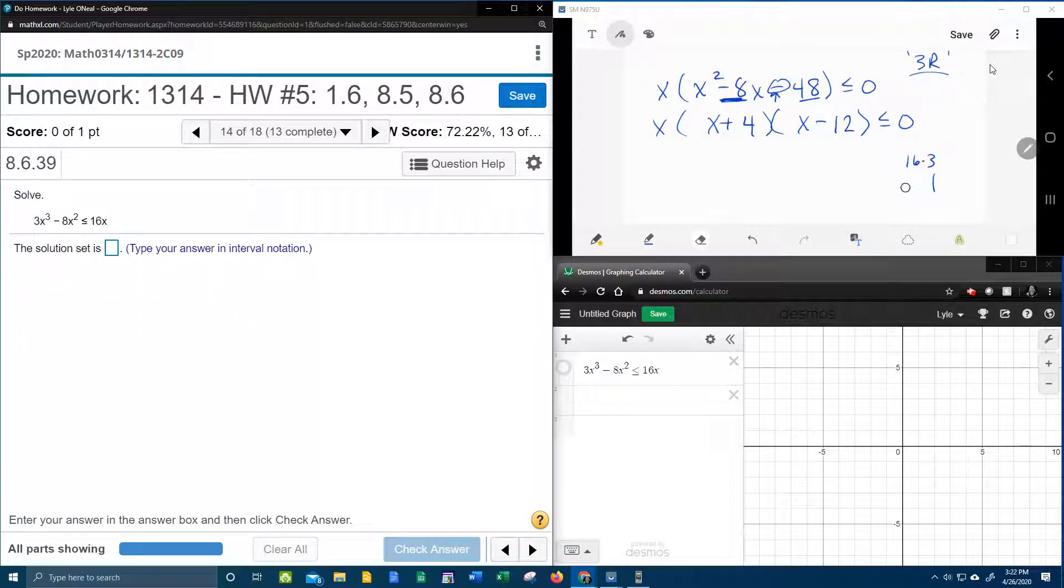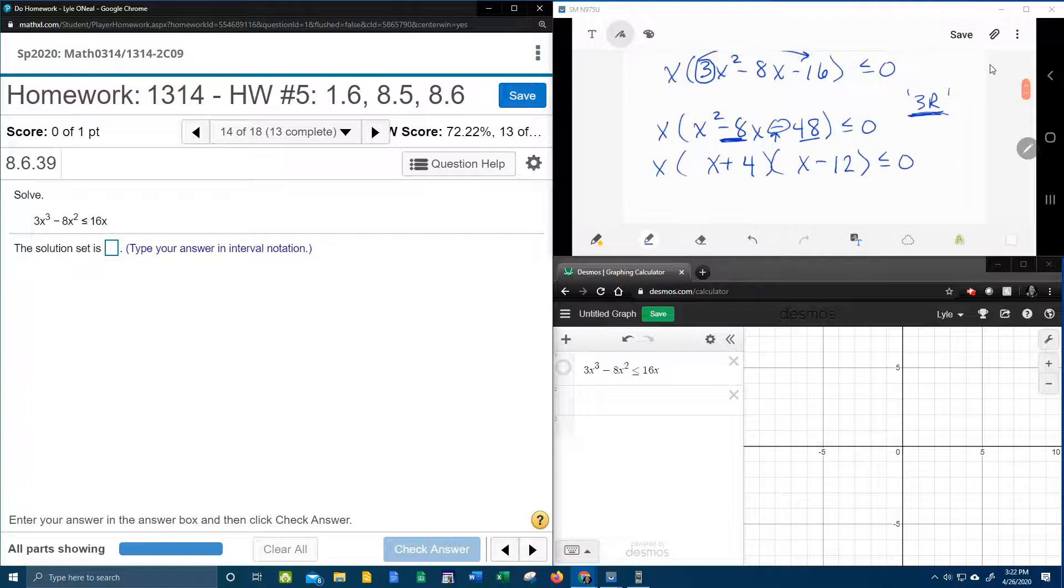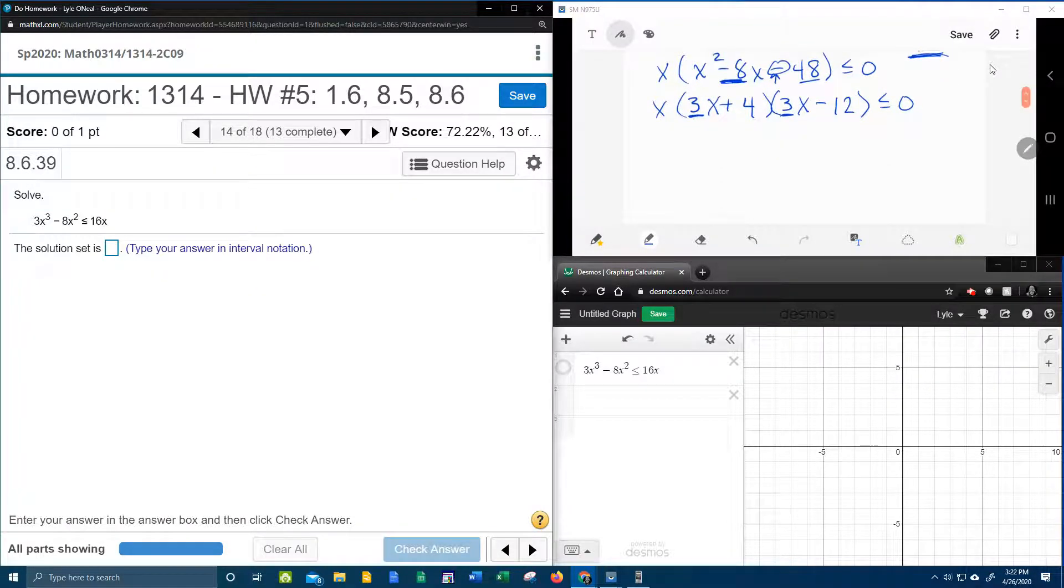Alright, so now I've found my factors. I need to remember that I'm using the 3R method. So now the second R is replace. So remember I removed the 3. Now I need to replace it in front of each x. And the third R is reduce.